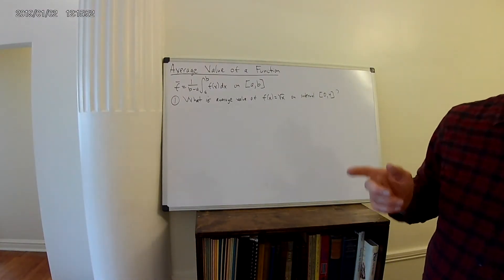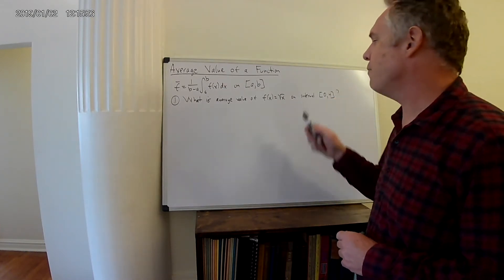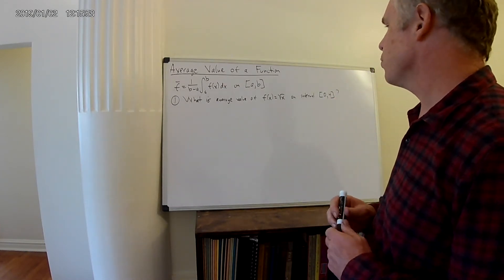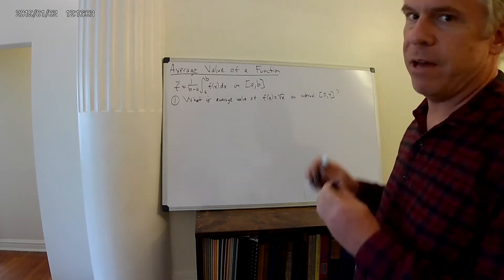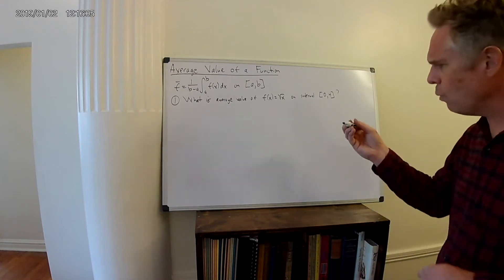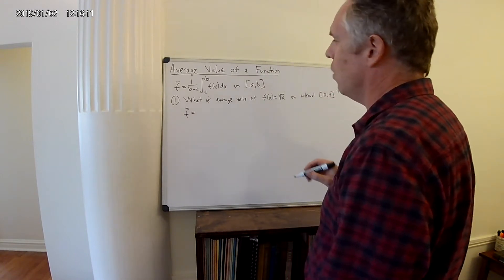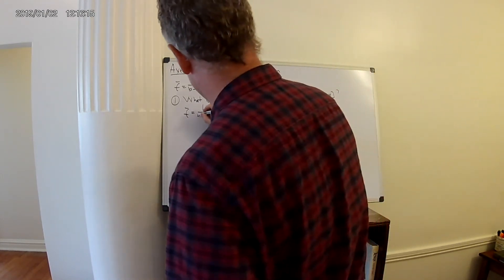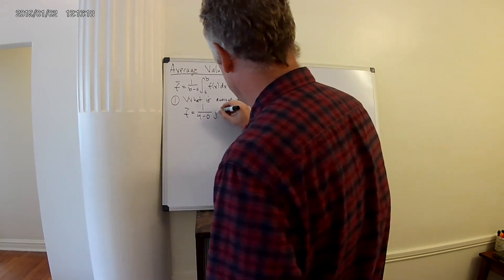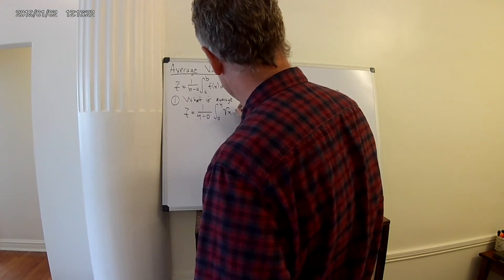What I want to do now is do an example problem in which we're asking ourselves: what is the average value of f of x equals square root of x on the interval 0 to 4? We can use this formula, and f average will be equal to 1 over 4 minus 0, times the integral from 0 to 4 of square root of x dx.